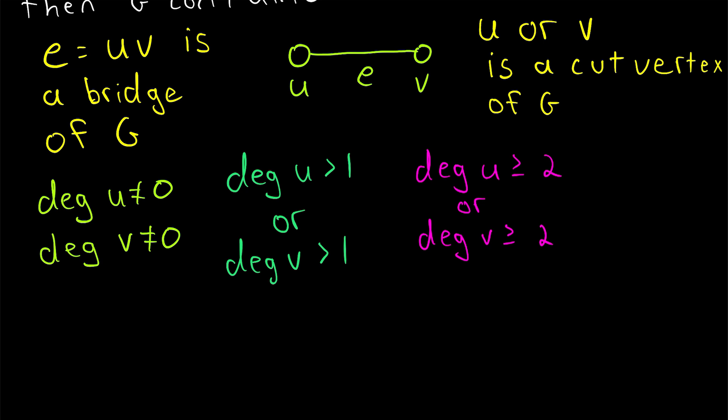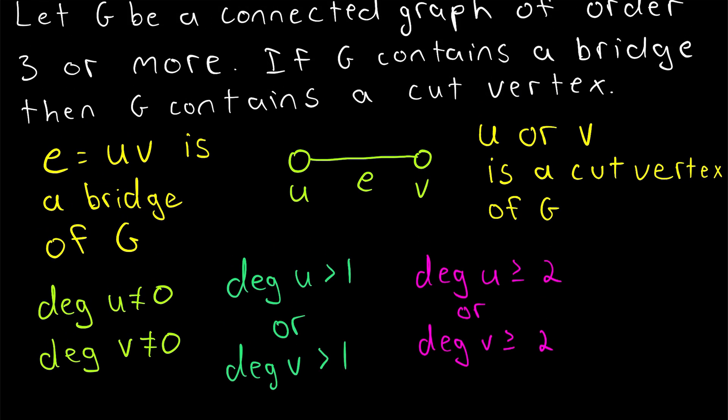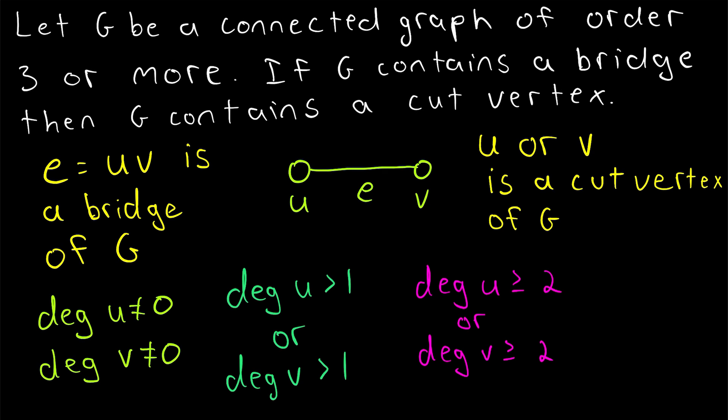And again, you can check the description for a link to a proof of that theorem. Thus, if G is a connected graph of order 3 or more, and G contains a bridge, then G contains a cut vertex.